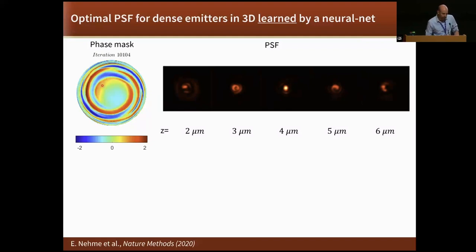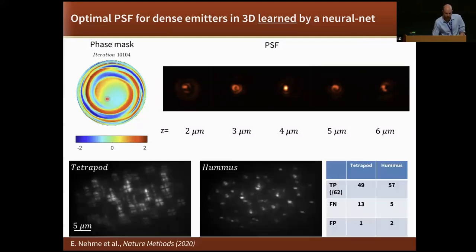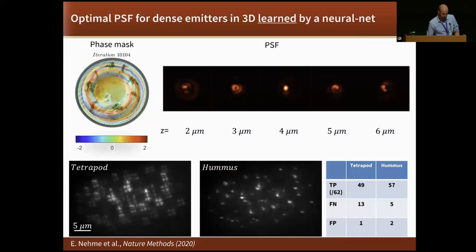The network is learning what the phase mask should be doing such that the decoding is optimal. This is called end-to-end optimization, and nowadays it's done a lot. This is what the network gives us. It tells us, if you want to be encoding these dense emitters, you want to use this phase mask. We use this phase mask. It's called the hummus because this really looks like a hummus plate. We didn't even bother coming up with a really formal name because the network can give you some other PSF or some other property. We don't get too attached to these phase masks nowadays. But we can fabricate them, implement them, and this gives you improved results because the PSF has smaller footprint, so overlap is less of an issue. We couldn't come up with it without having the network tell us what the optimal solution is.